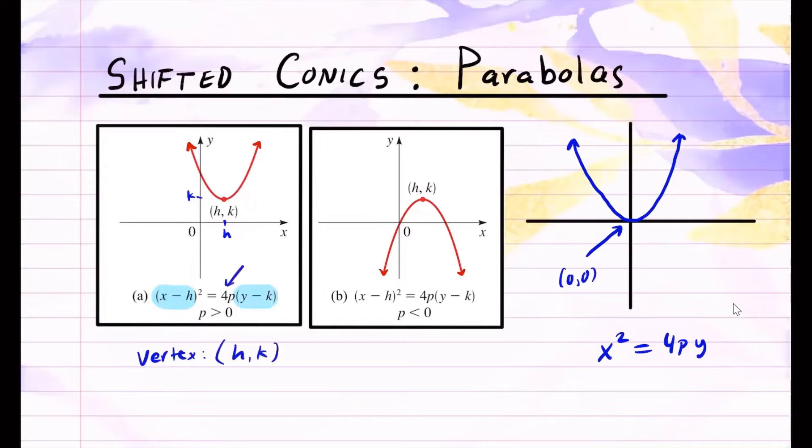And here you still have your p, so that will allow you to find what will be the point for focus and the directrix. Similarly, if you look at the second case, you still have the center h, k, but the only difference between this one and the previous one, our p value is negative, less than 0. Here p is greater than 0.